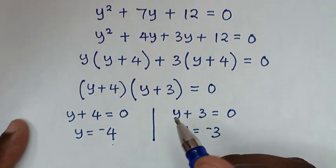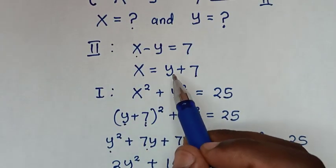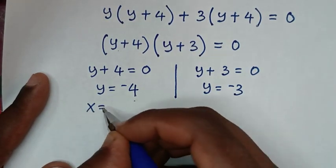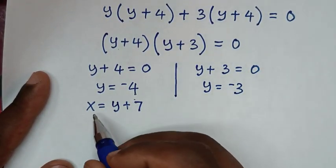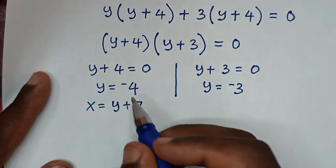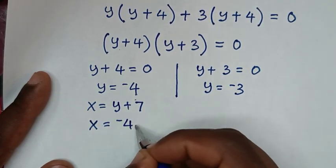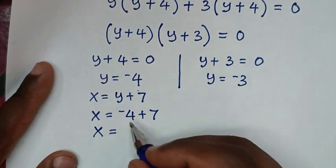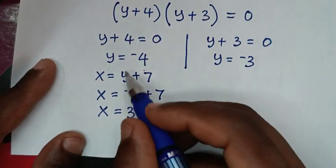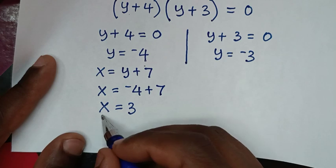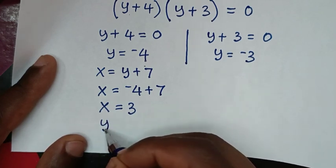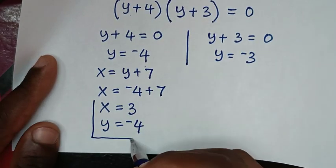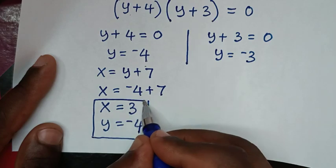To find x, we use x equals y plus 7. Substituting the first value y equals negative 4: x equals negative 4 plus 7, so x equals 3. This gives us the first solution: x equals 3 and y equals negative 4.